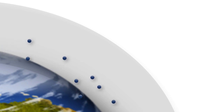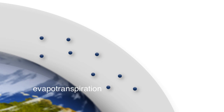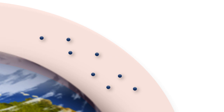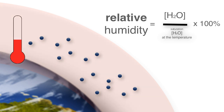Our atmosphere naturally absorbs water vapor — we refer to this as humidity. The water vapor is provided by evapotranspiration from Earth's land surface and evaporation from Earth's water surface. The concentration of water vapor that can be absorbed in the atmosphere increases with increasing temperature. Relative humidity is the percentage of water vapor in the air relative to the concentration that the air can hold when it's saturated.